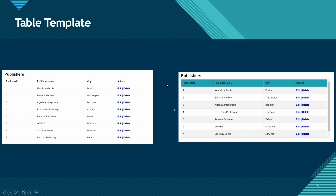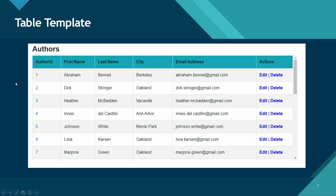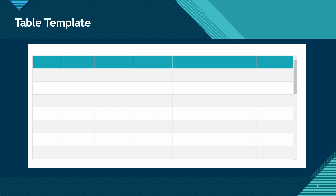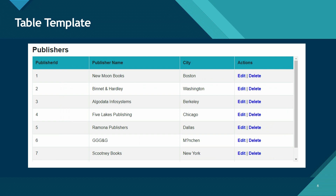So instead of doing that, what I'm going to do is create a templated component, which will be empty, but I'll apply the CSS which I want for all my tables to have. And then I will pass authors information as a render fragment. Then it doesn't matter if I'm passing authors information or publishers information. And if I do want to change CSS, I'll just go back to my templated component and change CSS there, and it will get applied to all the tables that I have in my application. Let's look at the demo.